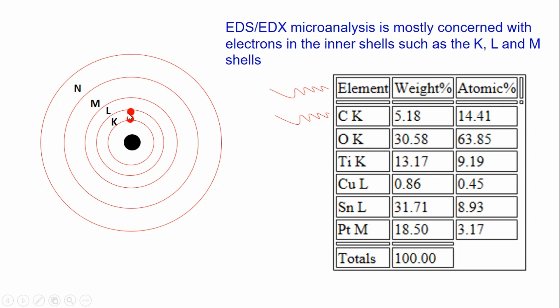If you look into the shells, there are also sub-shells. So we give names like K-alpha, K-beta, K-gamma, L-alpha, L-beta, L-gamma — because there are more electrons in sub-shells as well. This is how we designate those transitions, and this is how we know which shell the electron came from.